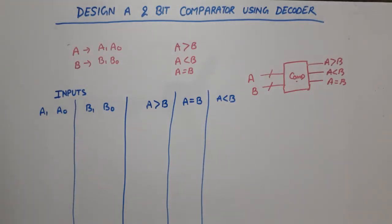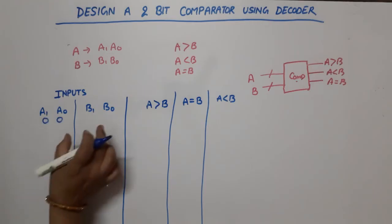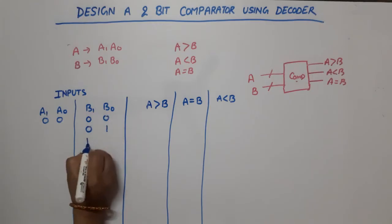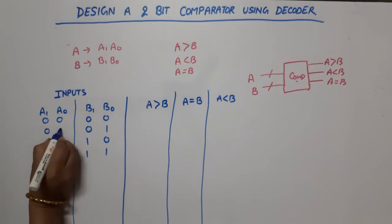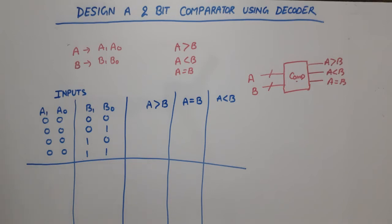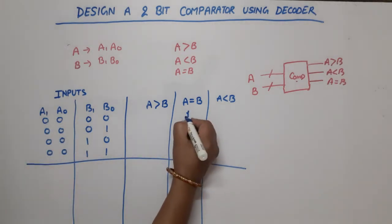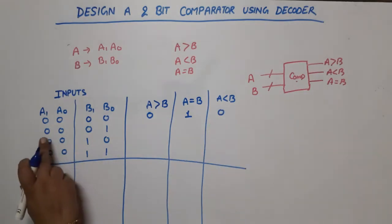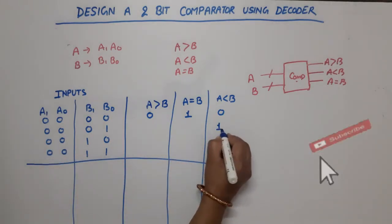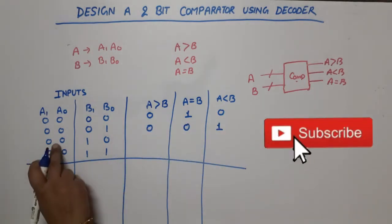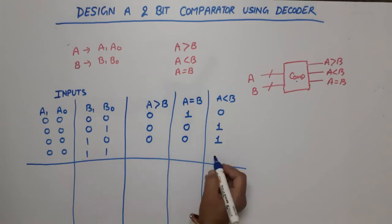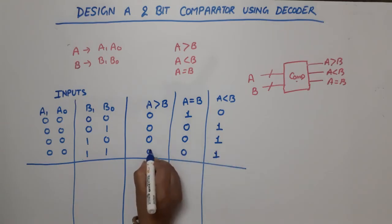When A is 0,0, it is compared with all combinations of B1, B0: 0,0 then 0,1 then 1,0 then 1,1. When A=00 and B=00, they are equal, so A equal to B is high, rest 0. When A=00 and B=01, A is less than B, so A less than B is 1, rest 0. When A=00 and B=10 or B=11, again B is greater, so A less than B is 1.